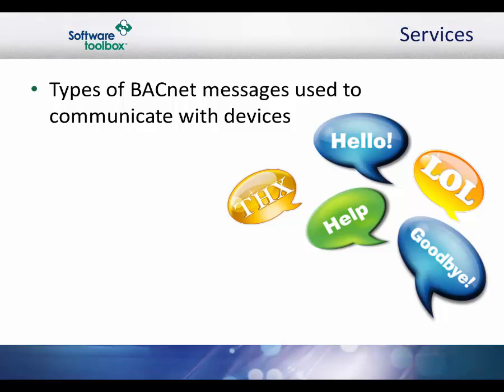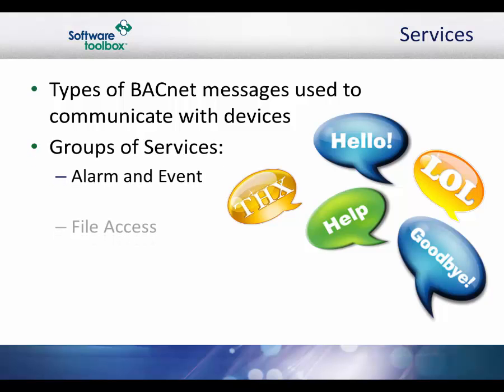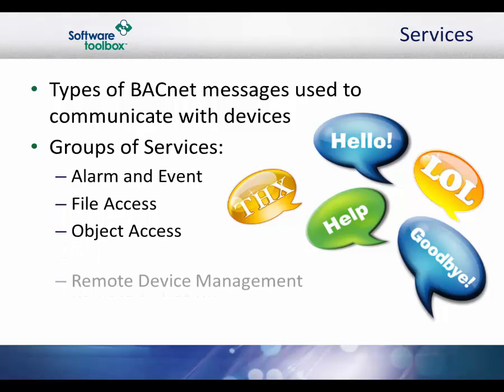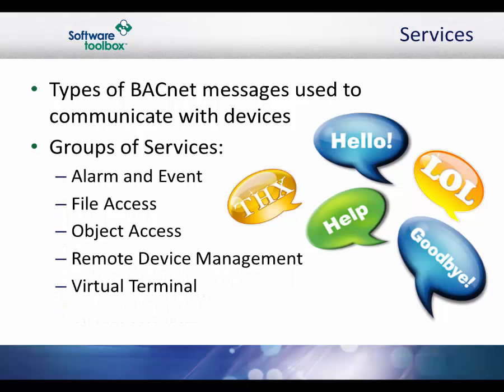There are currently five groups of BACnet message types. For example, one class contains messages for accessing and manipulating the properties of objects. A common one is the read property service request. This message causes the server machine to locate the requested property of the requested object and send its value back to the client. Other classes of services deal with alarms and events, file uploading and downloading, managing the operation of remote devices, and virtual terminal functions. Here are some examples of services categorized by their class.